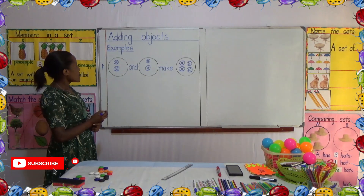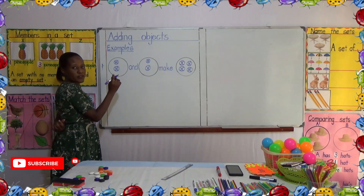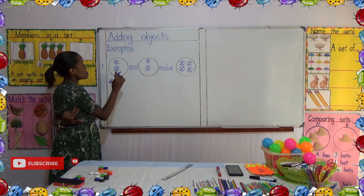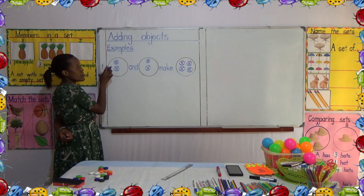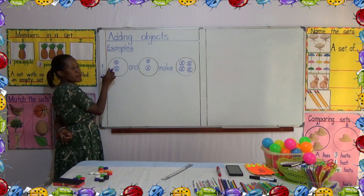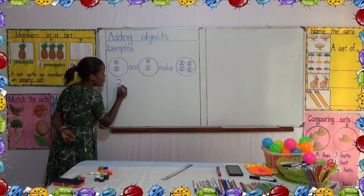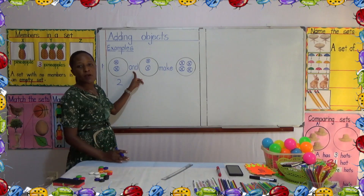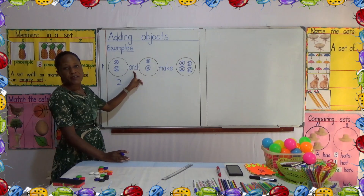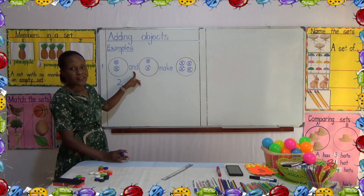Now, let's count these objects together. One, two. Again, one, two. So we shall have two. This time, we are not writing the word 'and' — we are putting a plus sign.